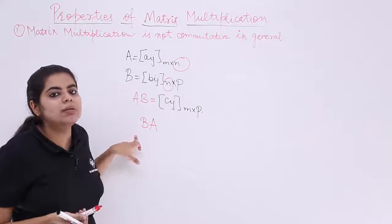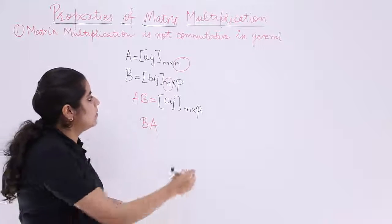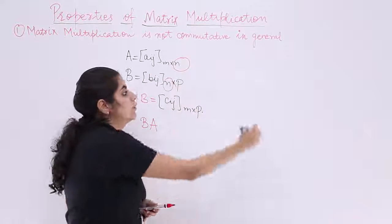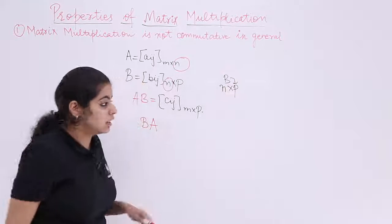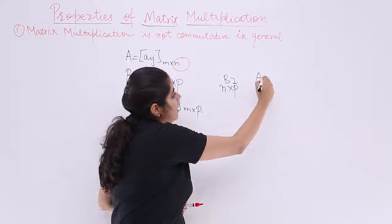B has become my pre-multiplier, A has become my post-multiplier. Now BA means what? You need to see from the perspective of B being first and A being later. So N by P is B's order, we remember this, and what about the order of A? It is M by N.